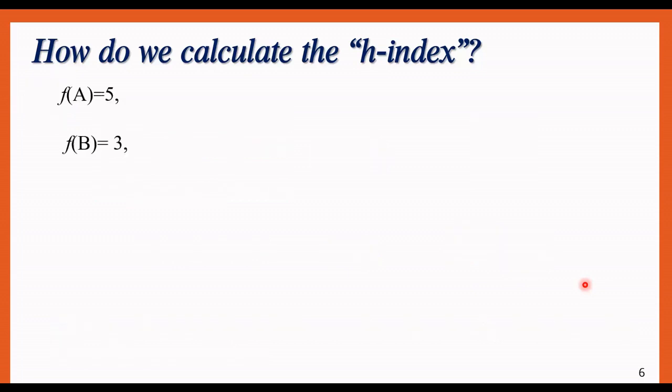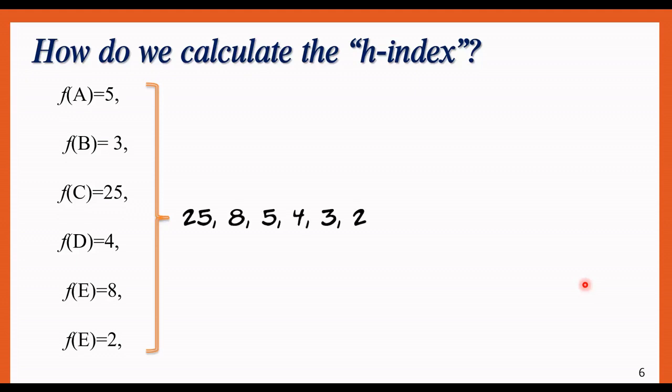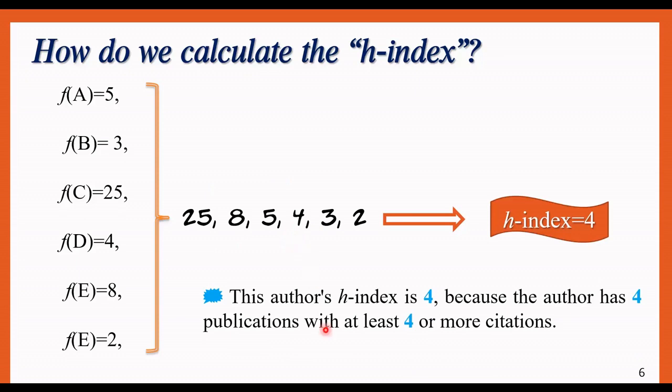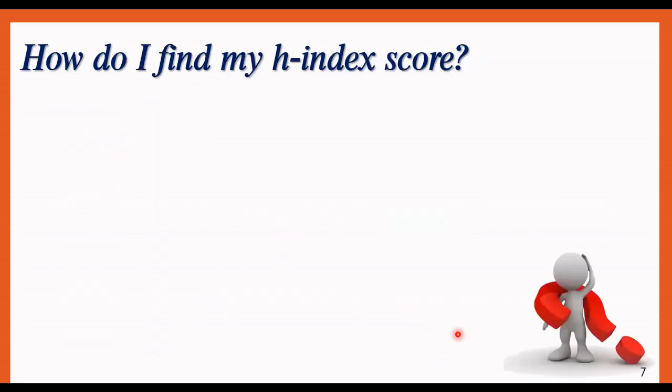Another example is here. I presented to you to better understand. We have another researcher with these papers and different citations. First of all, we should try to order them from the largest to the lowest one, like this. And then we try to calculate the H-index. It would be 4 because 25, 8, 5, and 4—four papers has at least 4 citations or more. You can see this definition here for better understanding. Please try to repeat it and try to count it for yourself.